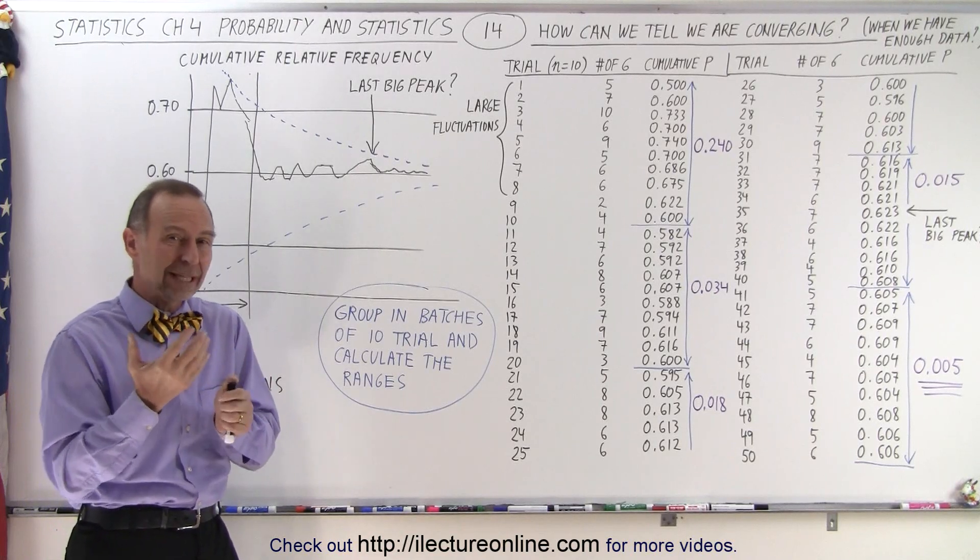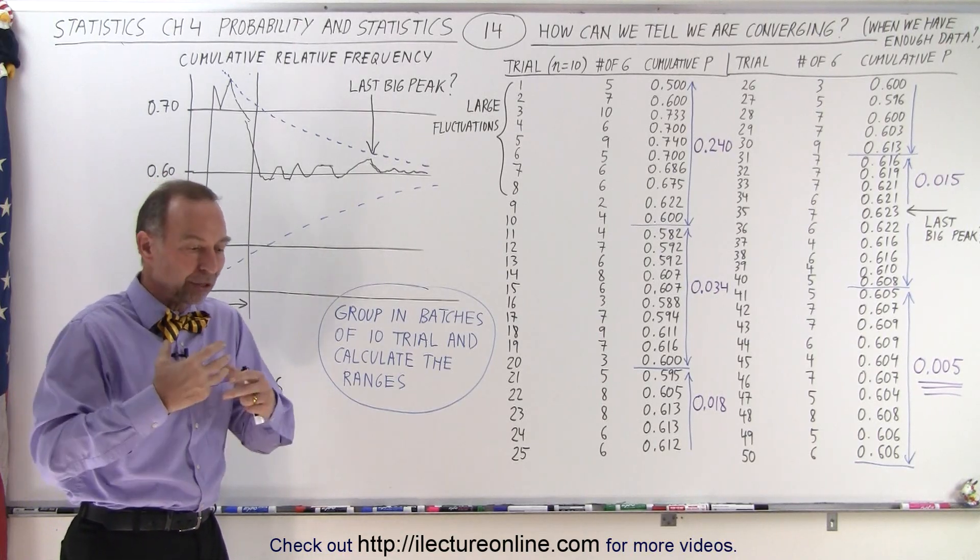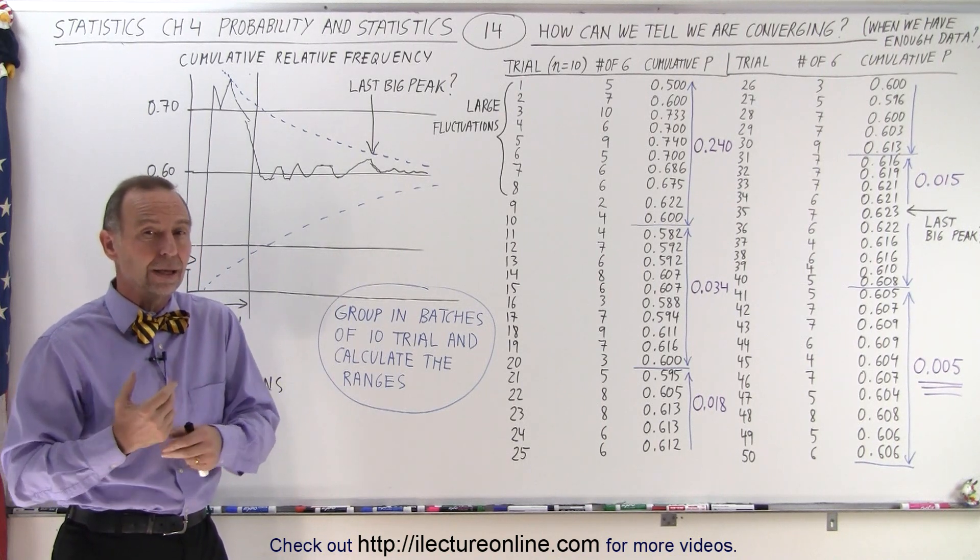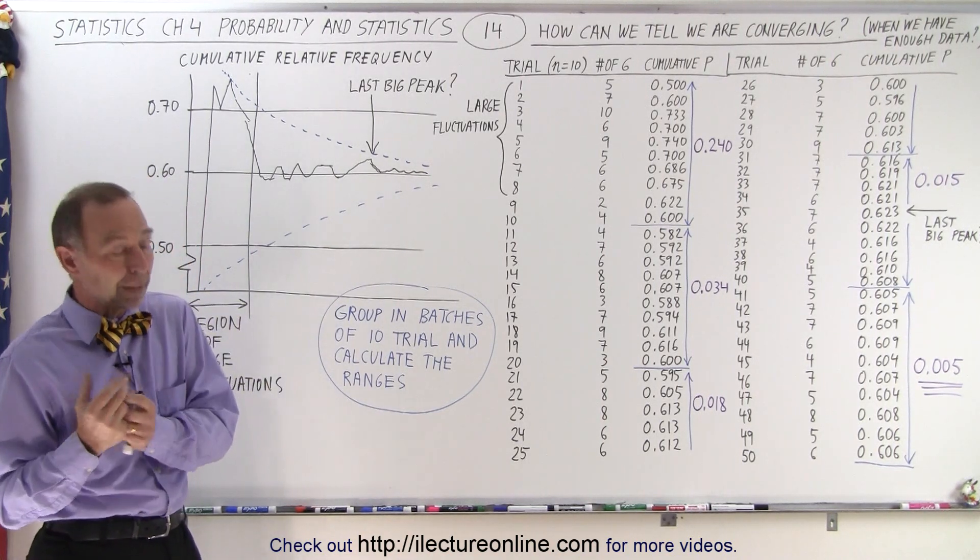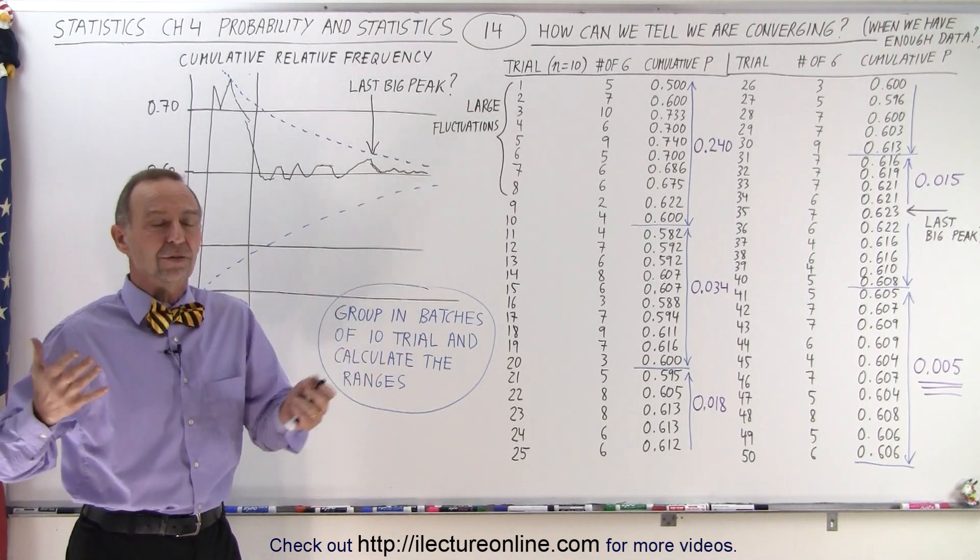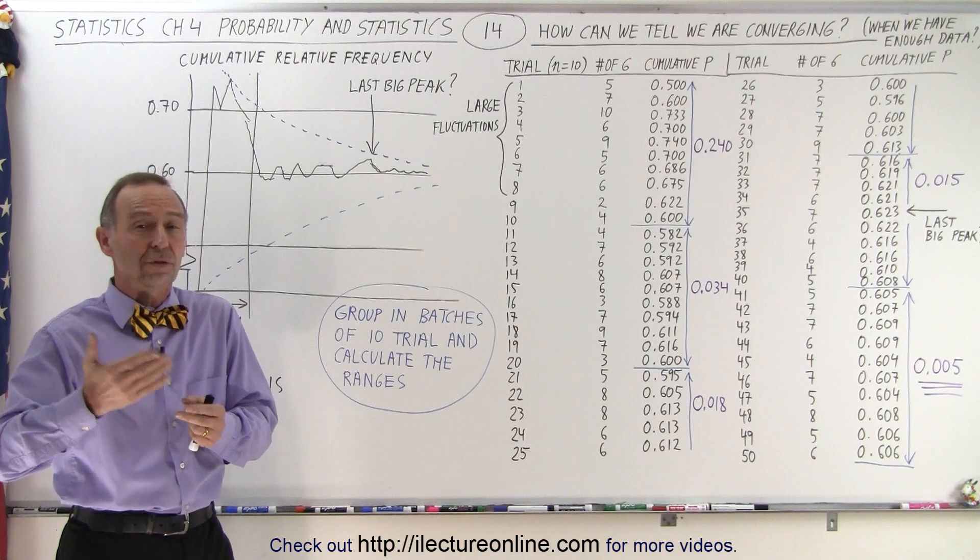So in this case we're dealing with a loaded die. We want to try to figure out how many sixes we will throw with this die. Of course we're looking for the experimental probability, not the theoretical probability, because we don't know what it is.